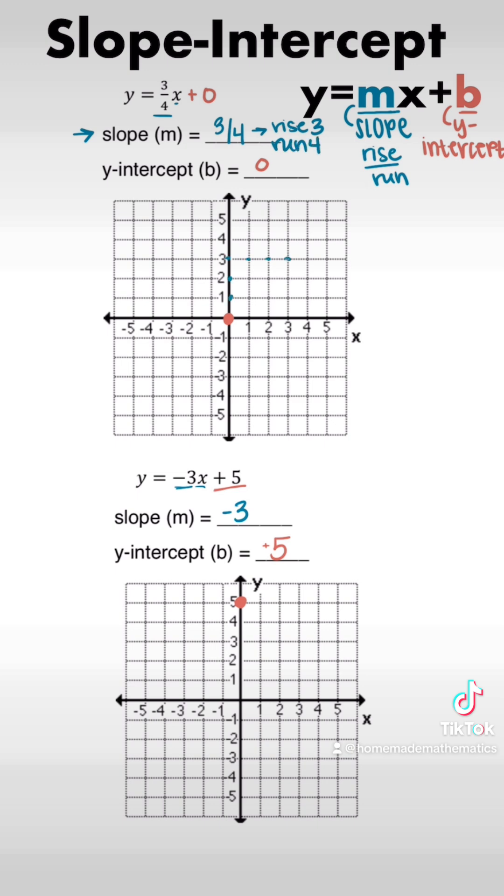Then from there, we're going to use our slope. So in our first example, that's 3 over 4. So we're going to rise 3, go to the right 4, so run 4. Or we can go down 3 to the left 4, because a double negative makes a positive, cancels out.